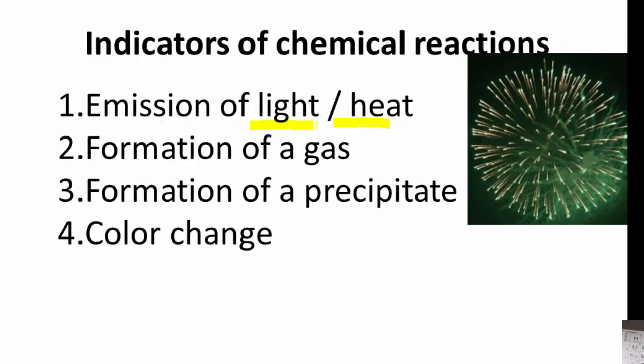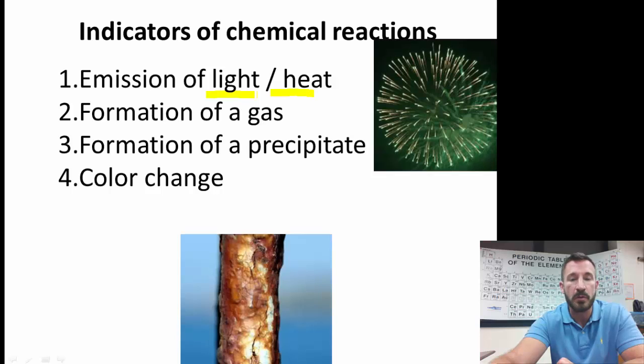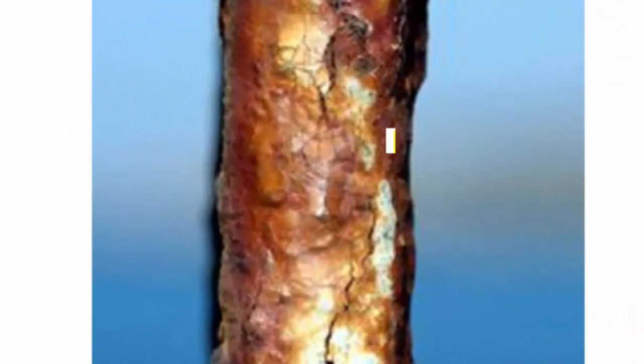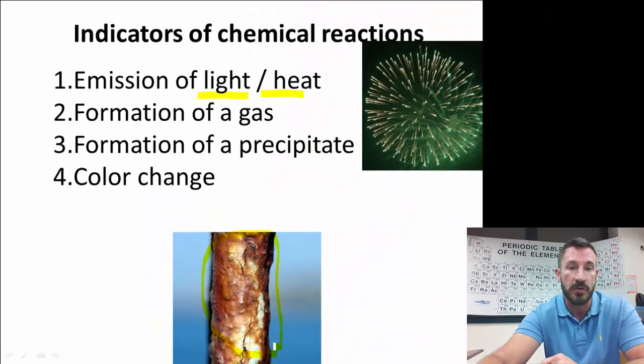Next, we have the color change. For example, when something rusts. If you take iron, which this is iron and it started to rust, it goes from a very shiny metal to one of a very dull appearance. So color change as that iron oxidizes is an indication of a chemical reaction.